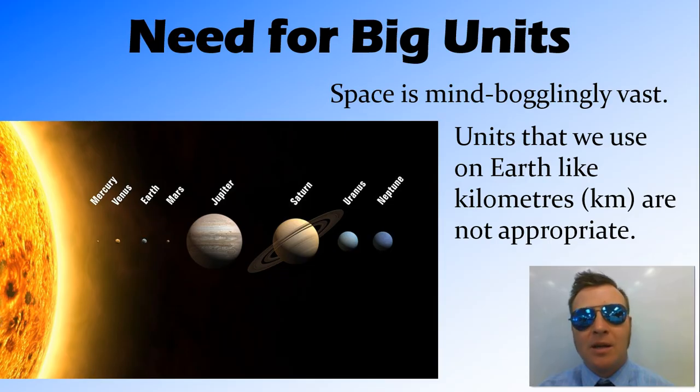So firstly, why do we need big units? Now we're all used to seeing pictures of the solar system, just like this one, where all the planets are lined up in a neat little row. But that's not what it actually looks like. Space is really, really, really big. And there's a lot of emptiness between planets, which is why it's called space.